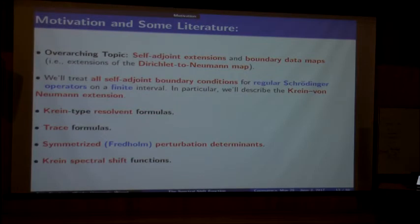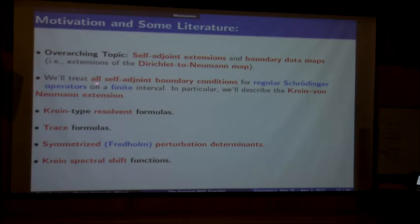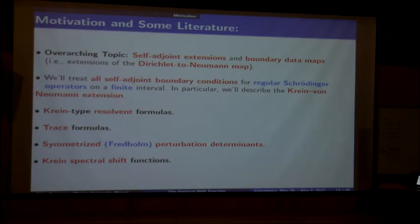This is all about self-adjoint extensions. These boundary data maps are natural extensions—in fact, in some cases identically, when the boundary conditions are Dirichlet and Neumann, these boundary data maps are just the Dirichlet and Neumann maps. I will discuss all self-adjoint boundary conditions for a Schrödinger operator, or in this case actually a three-coefficient Sturm-Liouville operator on a bounded interval. One can classify them all. Normally I would spend some time on the Krein–von Neumann extension, because I've been involved in it for a number of years.